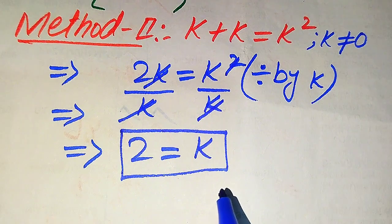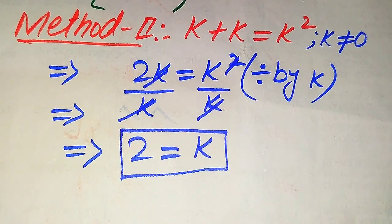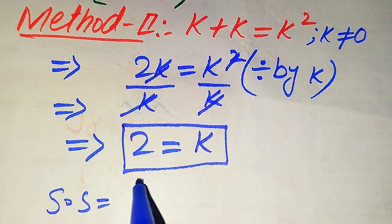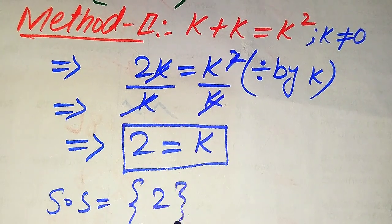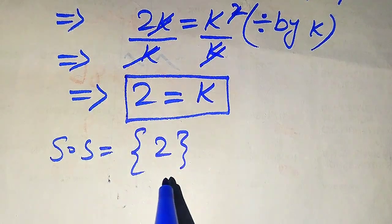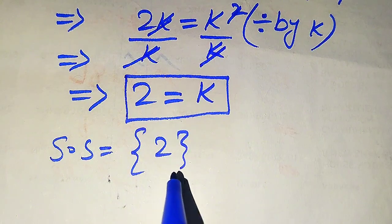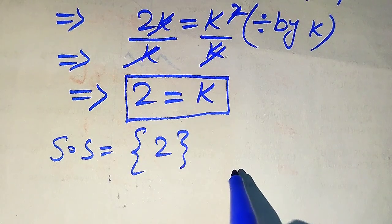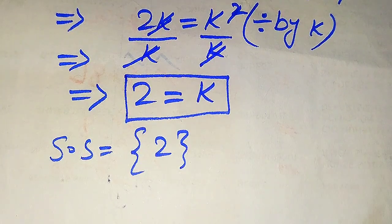In the second method, we get only one value: K equals 2. So the solution set from Method 2 is {2}. This value was also verified in Method 1 as satisfying the original equation, confirming it is our answer. Thank you for watching — please subscribe to the channel for more videos.